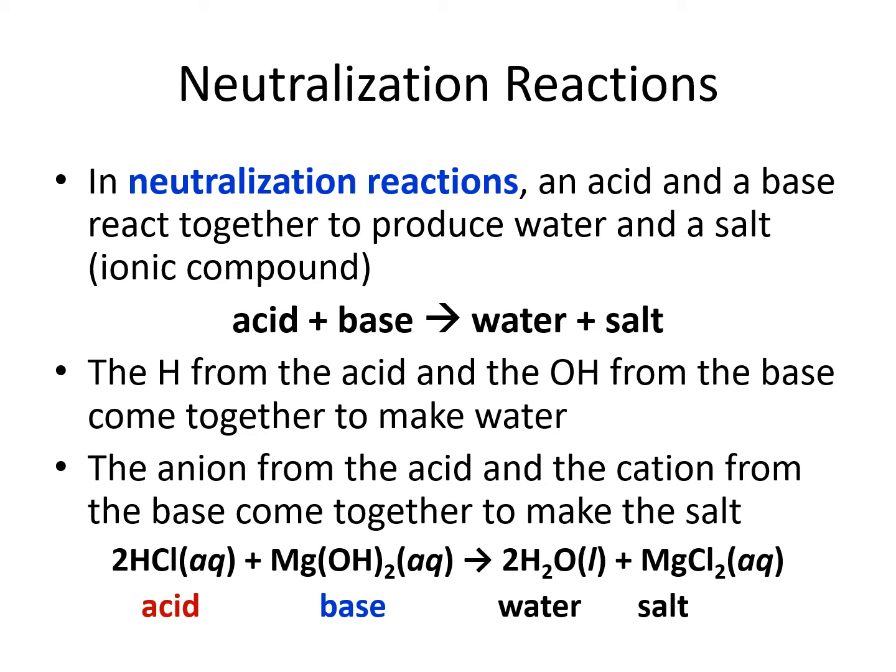In a typical acid-base neutralization reaction, the acid has an H in it and the base has an OH. The H from the acid and the OH from the base come together, making water as one of the products. The other ions that are not the H and the OH come together to make the salt — those would be the anion from the acid and the cation from the base.